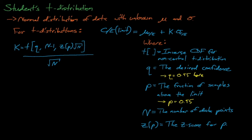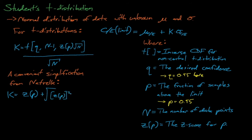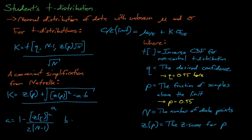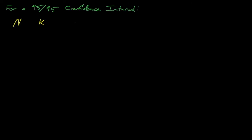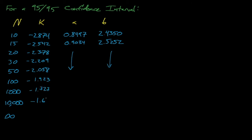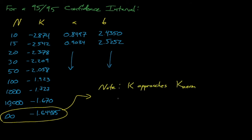Thus, rather than generating the exact t-distribution, Natrella has offered a helpful approximation for estimating the kappa values for a t-distribution, which relies on constants a and b defined here. Here are several values for kappa, a, and b as a function of the number of points used to construct the t-distribution for a 95-95 confidence interval. We see that kappa is larger if we have fewer data points with which to construct our normal distribution, and that it approaches negative 1.64485 as our number of data points increases indefinitely. Our normal distribution's mean and standard deviation will contain more uncertainty if we use fewer data points, so we'll need to use a larger, more negative value of kappa since we have less confidence in the mean and standard deviation of this constructed distribution.